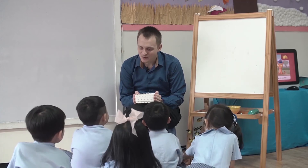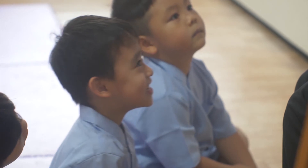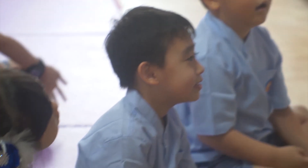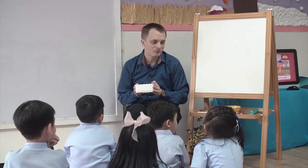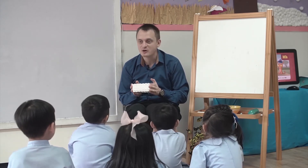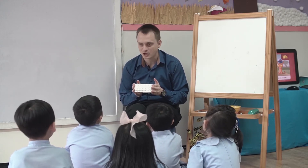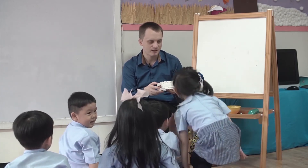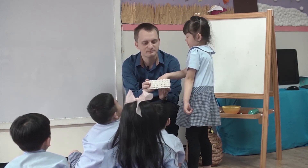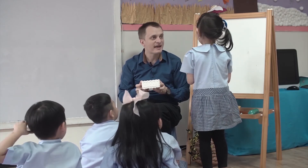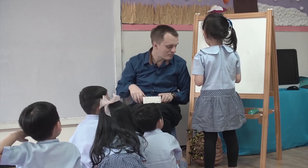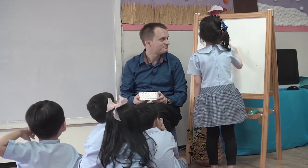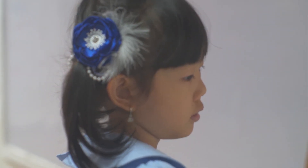Now we're going to play 'Pick the Letter and Write It on the Board.' You're going to pick out a letter from the basket and then write it on the board — but you have to close your eyes when you pick the letter. Who wants to go first? How about Celine? Close your eyes. Now pick a letter. Open your eyes — what letter is it? H. Is it uppercase or lowercase? Uppercase. Would you like to write it? You can write uppercase H. Lovely, well done Celine!